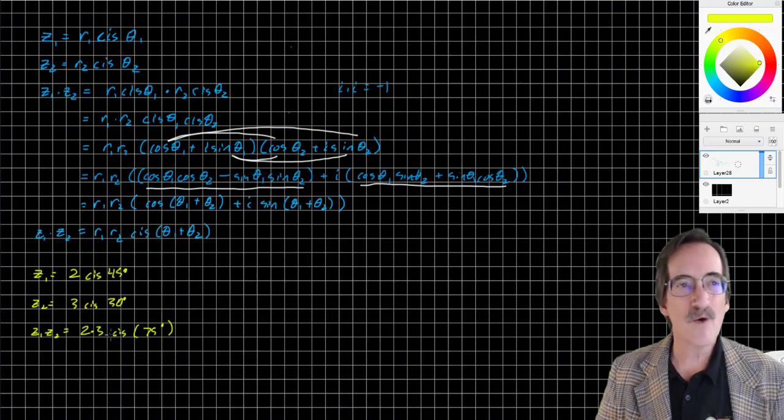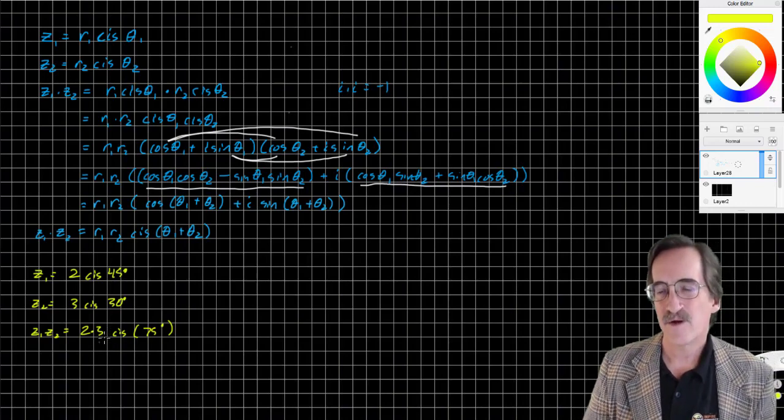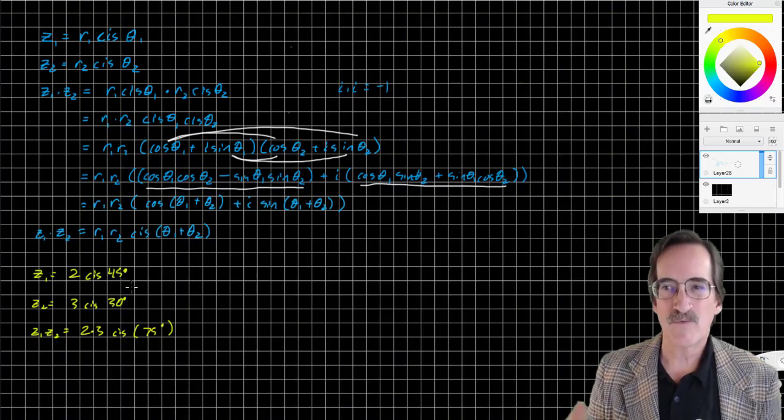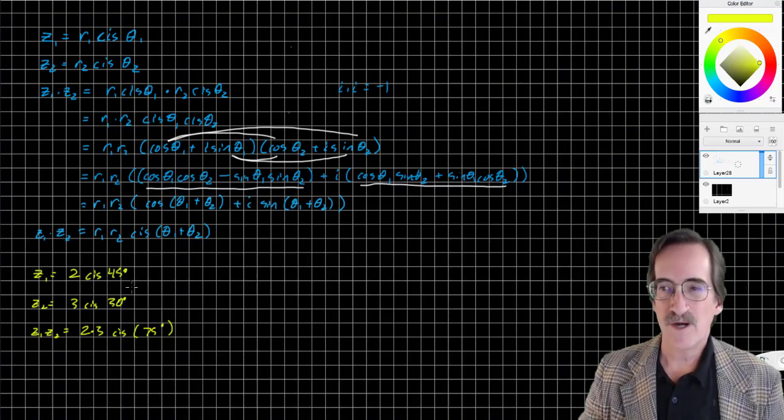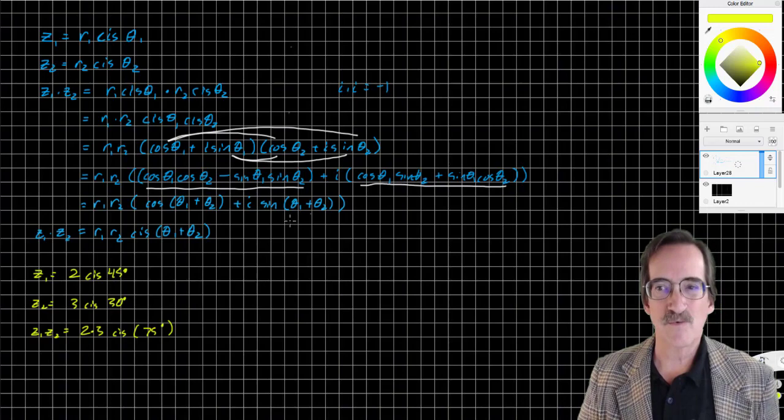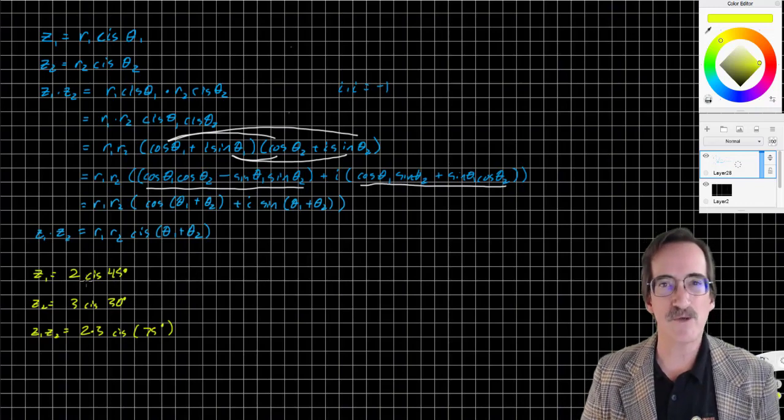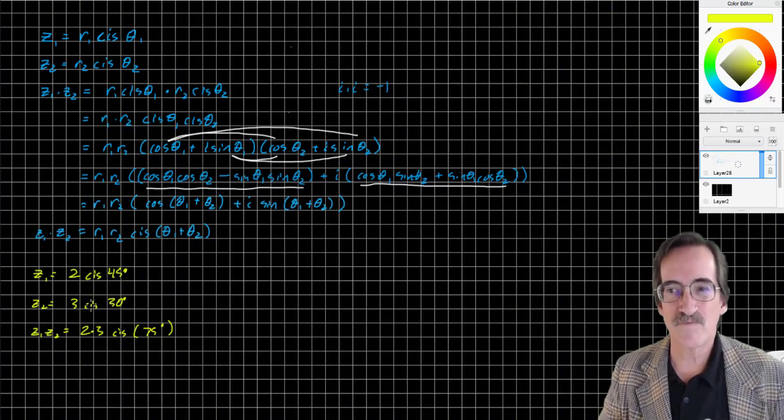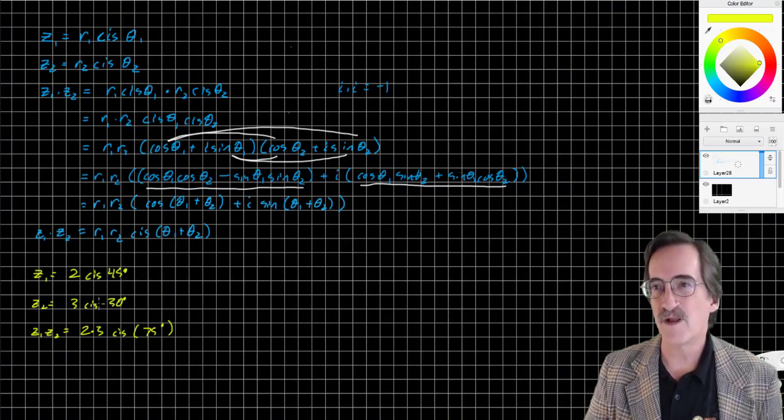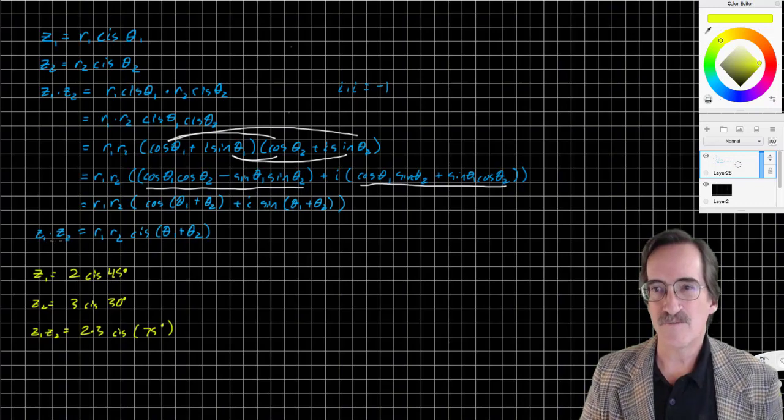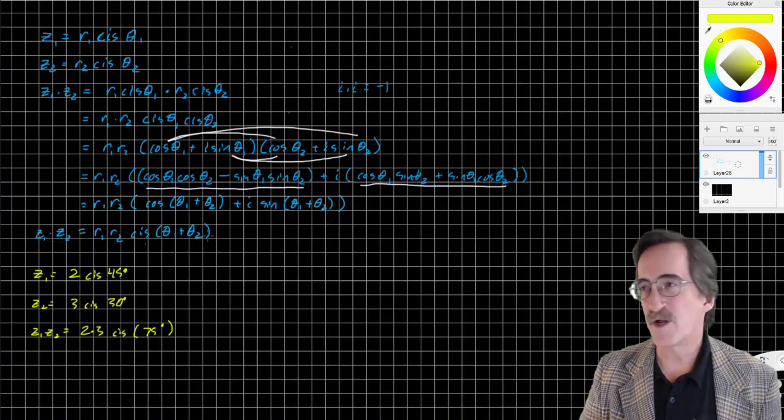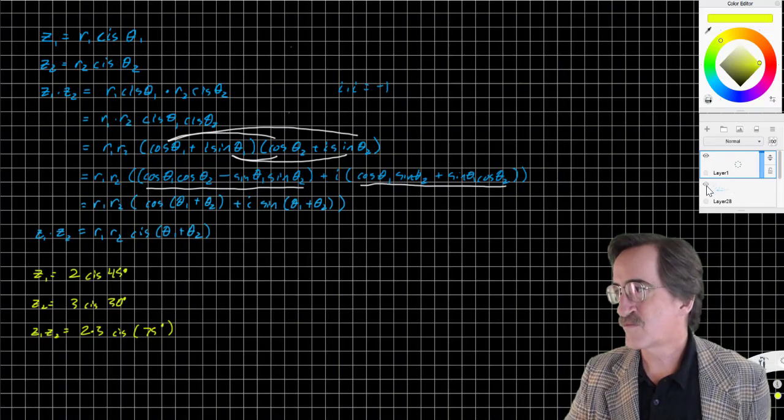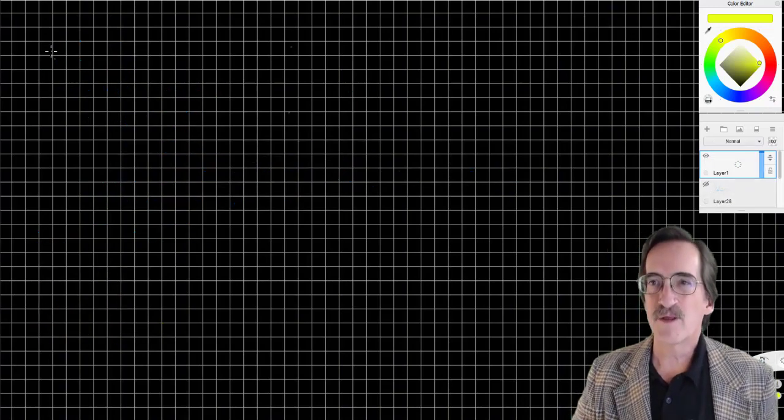Now it's not quite so easy when you have rectangular coordinates. If you're just multiplying rectangular coordinates straight off, it's not that hard to distribute and get your answer. But where the real power comes in is, what if I want to raise Z to a power? Let's do that.